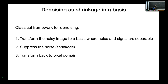The classical denoising framework consists of three steps: first, transform the noisy image to a basis where noise and signal have different, separable representations; second, suppress the noise using a shrinkage function applied to the coefficients in that space; and third, transform back to the pixel domain. The trick is to find a basis where the image has a compact representation, so suppressing noise doesn't lose signal.